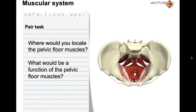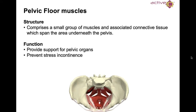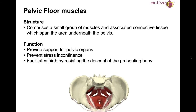Where would you locate the pelvic floor muscles, and what is their function? The pelvic floor comprises a small group of muscles and associated connective tissue which span the area underneath the pelvis. The function is to provide support for the pelvic organs, prevent stress incontinence, and facilitate birth by resisting the descent of the presenting baby — forming part of the inner unit.